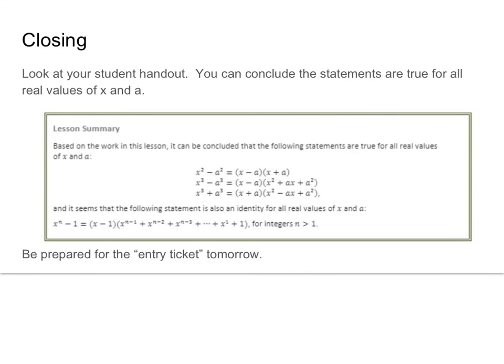Look at your student handout. You can conclude these statements are true for all real values of x and a. We have the difference of perfect squares, the difference of perfect cubes, the sum of perfect cubes, and what those patterns are going to be. The following statement is also an identity for all real values of x and a — we can do that for all values if it's subtraction. Good work today.